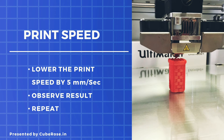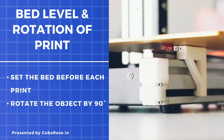Bed leveling and rotation of print angle: bed leveling must be done before each print, not just because of ghosting but also to improve print quality overall. Leveling your bed accurately will help to fix this problem up to a certain degree. Along with bed leveling, turning the object 90 degrees while printing is also a great idea to test. I would highly recommend you follow every step mentioned in this video to completely remove the ghosting effect from your 3D printing.